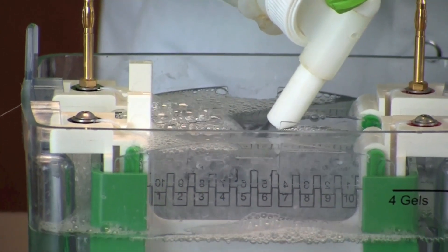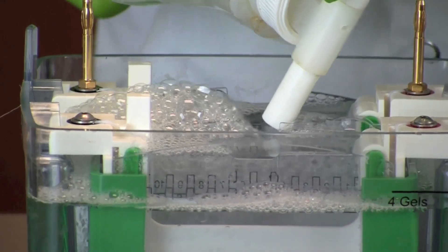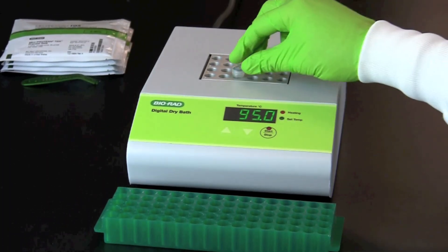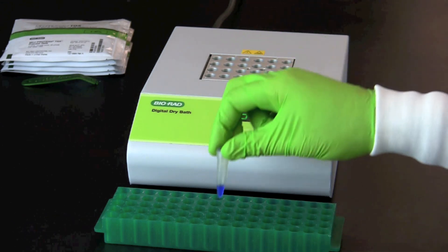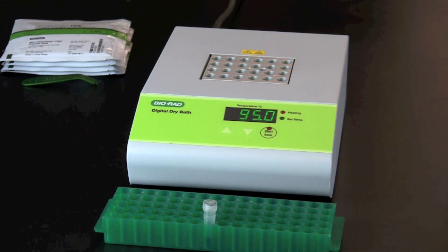The gels are now ready to load. Heat the fish sample and actin and myosin standard to 95 degrees Celsius for 2 to 5 minutes.